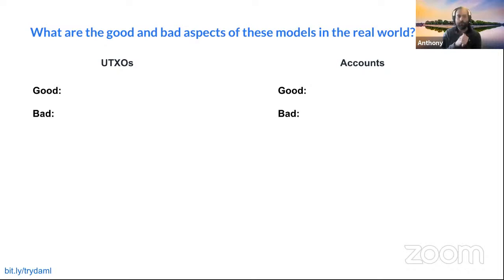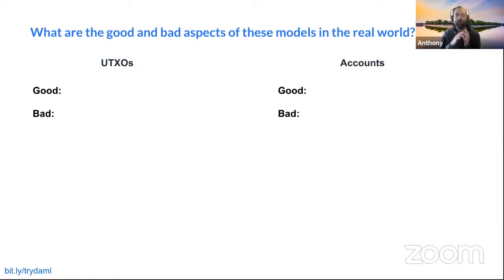Andre noted that you get bigger control of funds with UTXOs — you get to pick which bills or coins you're actually spending. Alfred also made a great point that it's easier to reason about accounts when programming smart contracts than it is with UTXOs. I'll admit I'm probably partial to UTXOs, and that might come through in the rest of this. But that is a good point — accounts do make reasoning quite a bit easier.